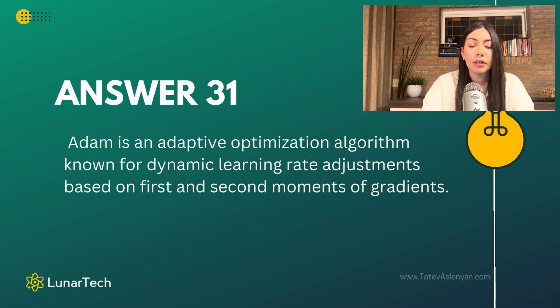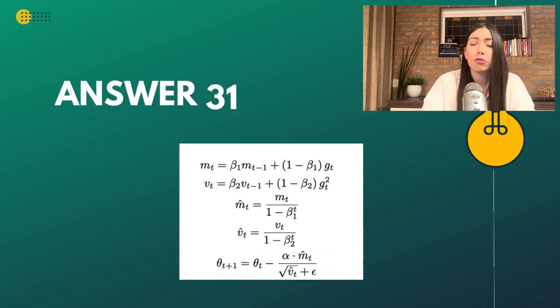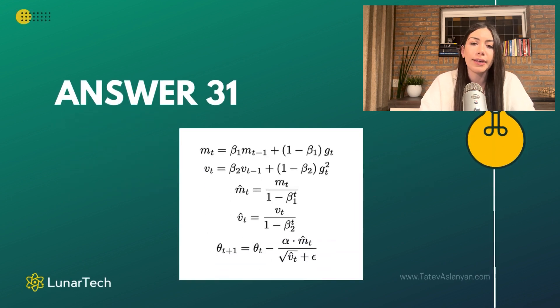When it comes to Adam, it can be represented by this mathematical representation. You don't need to know it, but I always think it helps to bring perspective to how it combines the two worlds, the RMSProp and SGD with momentum, and why it is actually so useful.